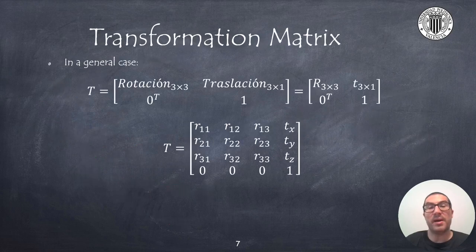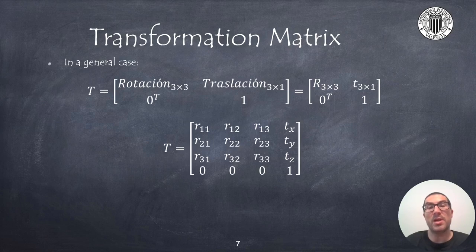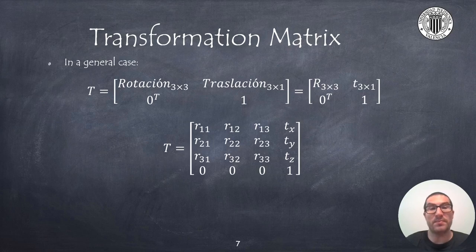These four basic transformations are the basis for composing any transformation in 3D space. As we saw in the previous presentation, a general transformation will be composed of a 3×3 rotation submatrix and a 3×1 translation vector, as a result of applying rotation and translation operations.